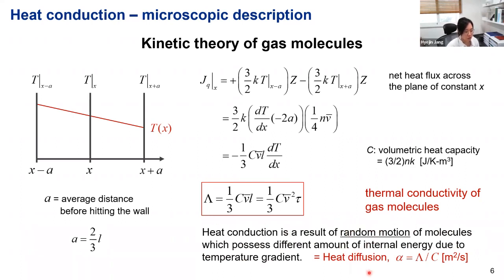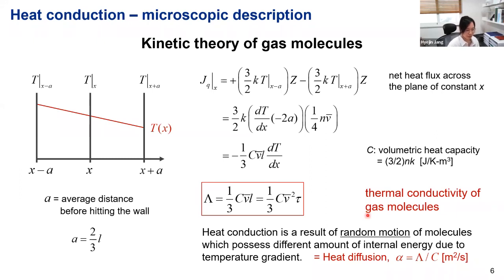This describes the microscopic picture of heat conduction and is the origin of the diffusion process — the random motion of molecules. We also call heat conduction a heat diffusion process. From thermal conductivity, we can also derive thermal diffusivity, which is thermal conductivity divided by heat capacity, giving units of m²/s. So far, I've introduced the macroscopic description, which is Fourier's law, and the microscopic description given by the kinetic theory of gas molecules. But we are more interested in heat transport in solid systems — how can we apply those descriptions to solid systems? That is the topic of the next slide.